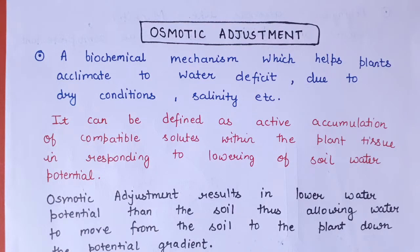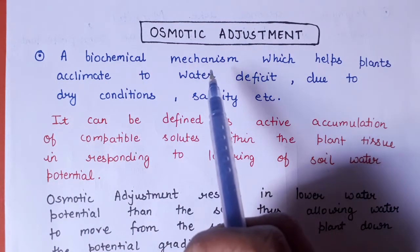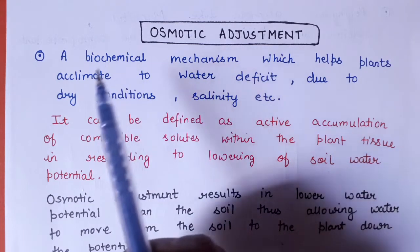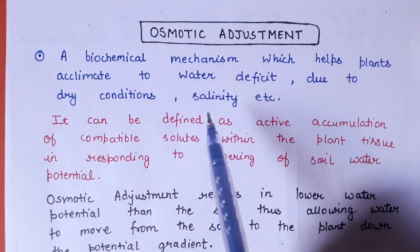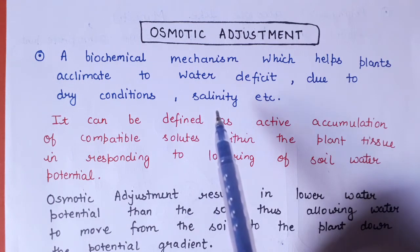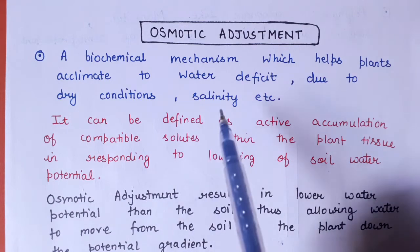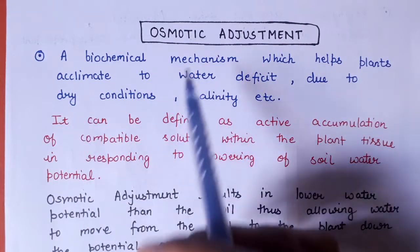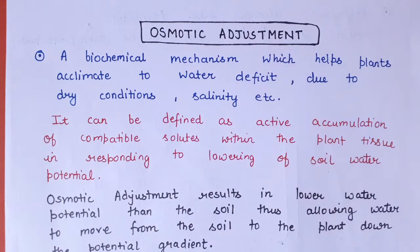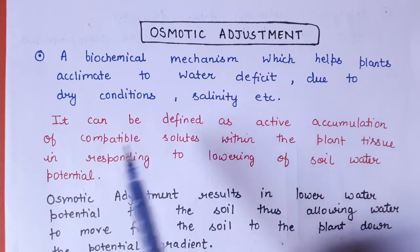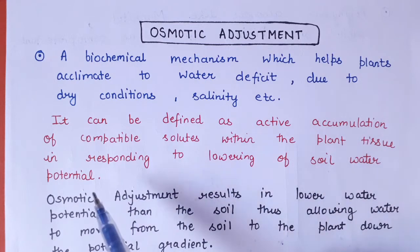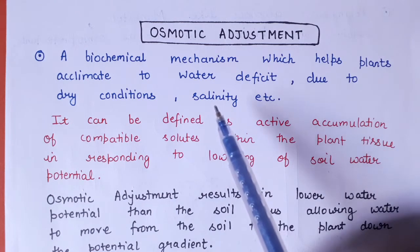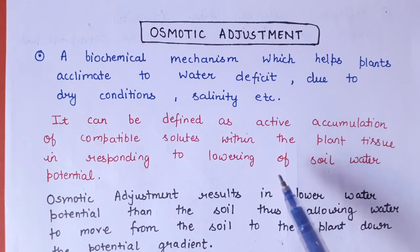Osmotic adjustment is basically a biochemical mechanism which helps plants in acclimation when plants grow in water-deficient soil, saline soil, or dry conditions. It can be defined as the active accumulation of compatible solutes within the plant tissue in response to lowering of soil water potential. When plants grow in such situations of salinity or water deficiency, what will happen in those conditions?